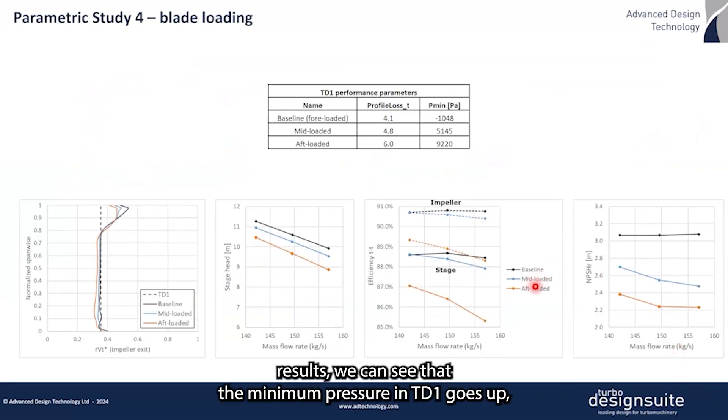Among other results, we can see that the minimum pressure in TD1 goes up, which translates to lower NPSHR levels or an improved suction performance in CFD with aftloading.